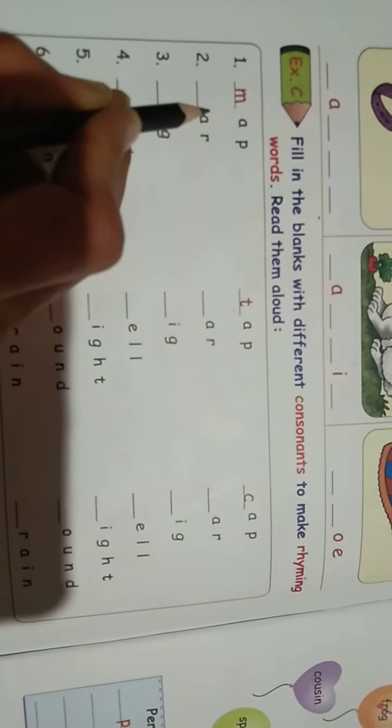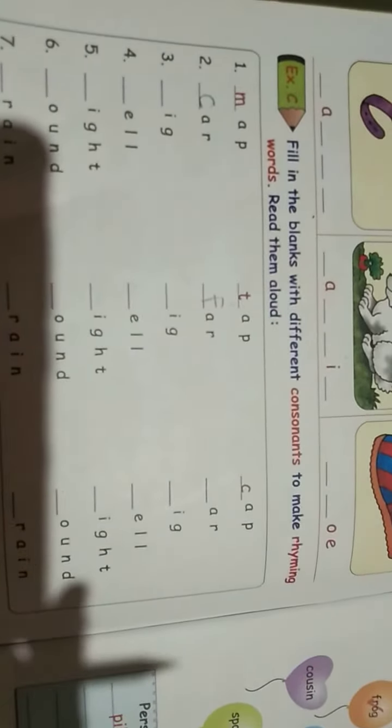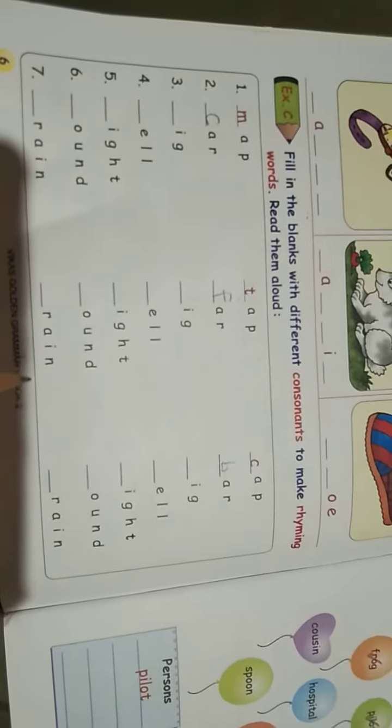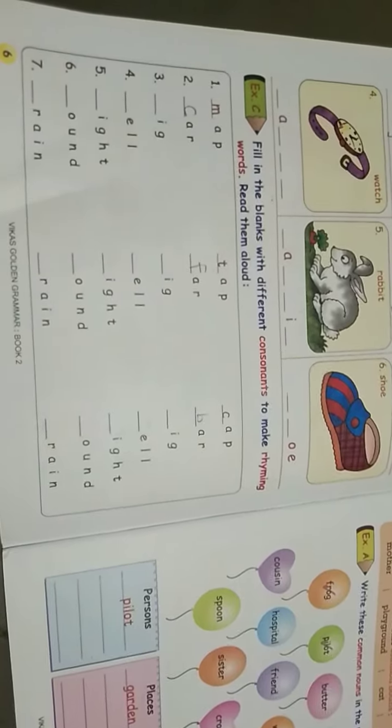Car, far. C A R car, F A R far, and last one B A R bar. Like that you complete other rhyming words also and that letters consonants also. Understood?